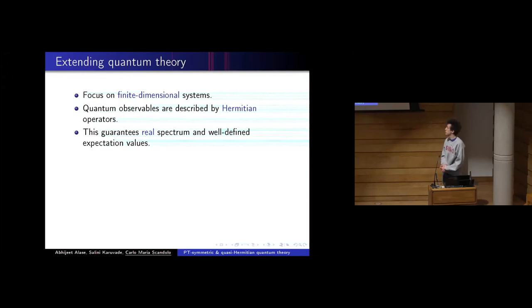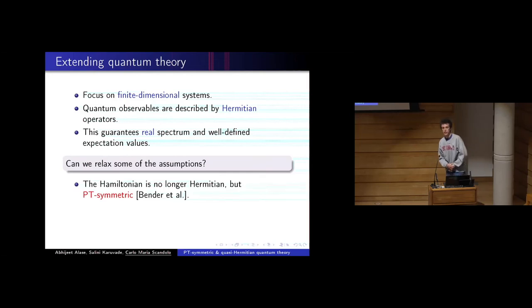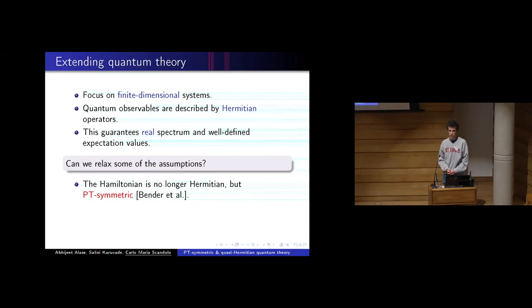One fundamental postulate of quantum theory is that quantum observables are described by Hermitian operators. Hermiticity ensures a real spectrum — measurement outcomes are real numbers — and allows expectation values to be defined since Hermitian operators can be diagonalized with orthogonal spectral projectors. The question is whether we can relax this condition. Non-Hermitian Hamiltonians arise in condensed matter physics, for example in the study of Lee-Yang singularities in statistical mechanics associated with phase transitions.